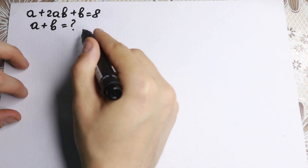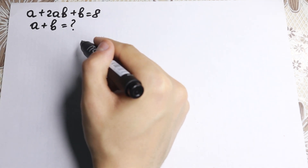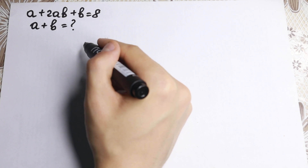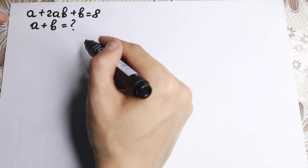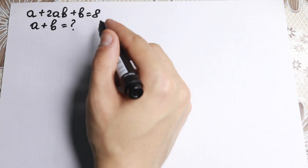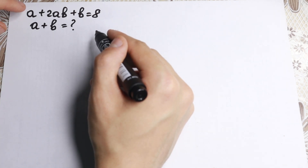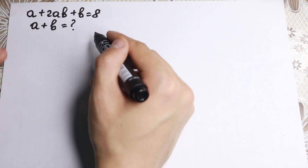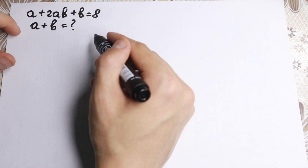We have a plus 2ab plus b equal to 8, and from here we need to find a plus b. We have a and b in one equation, so it's not like a classic quadratic equation we can solve quickly with formulas. We have two variables in one equation. This equation is called a Diophantine equation, so this is a Diophantine equation problem.